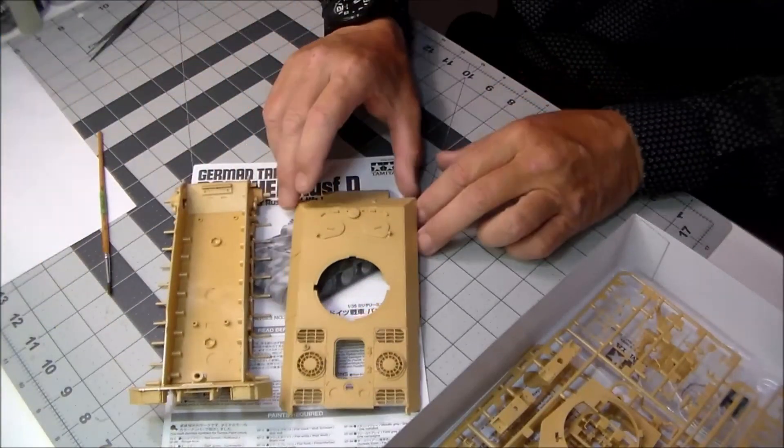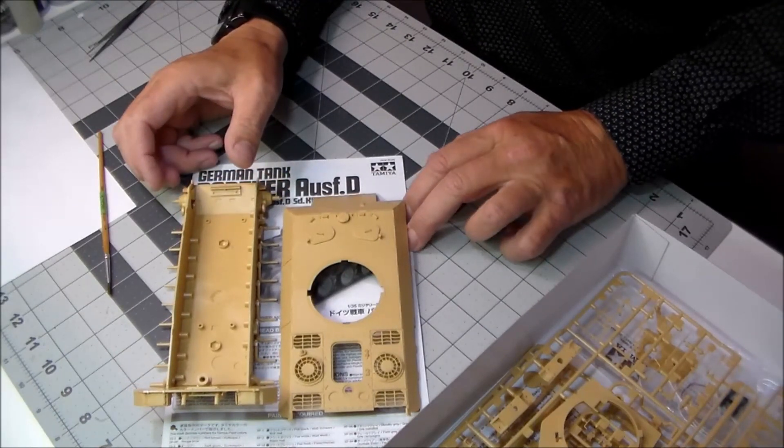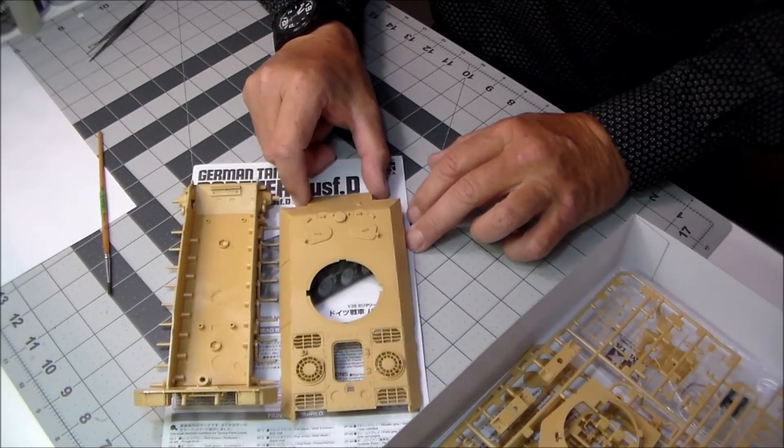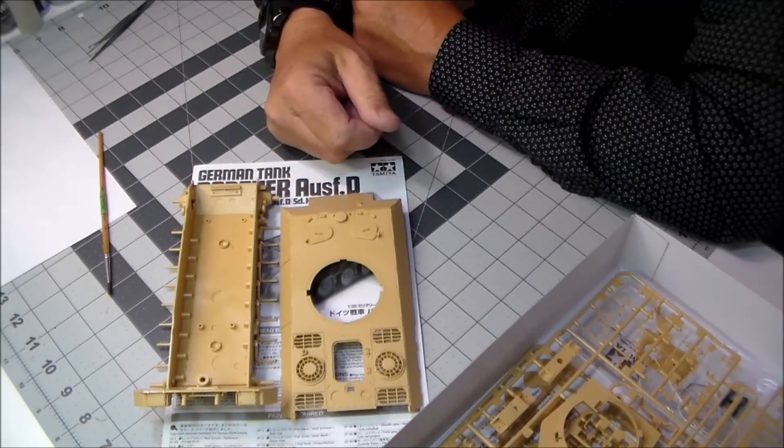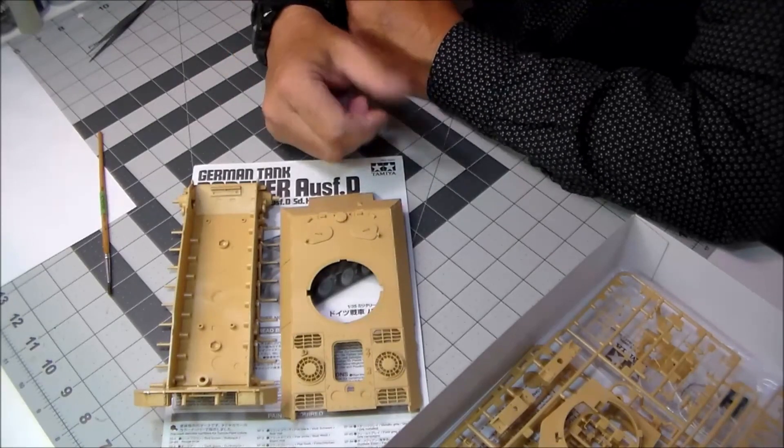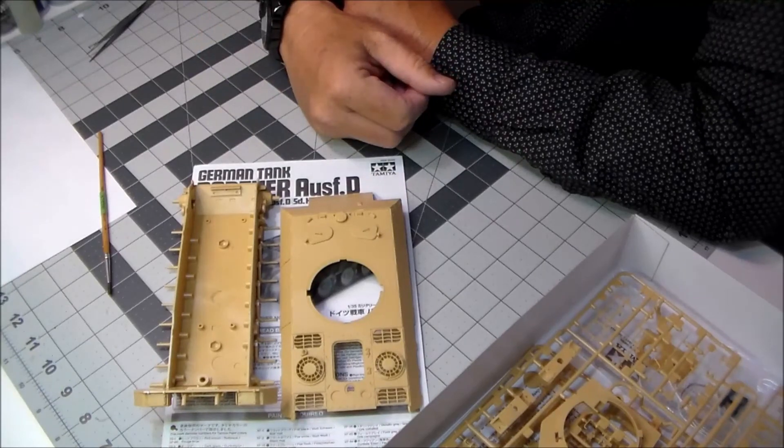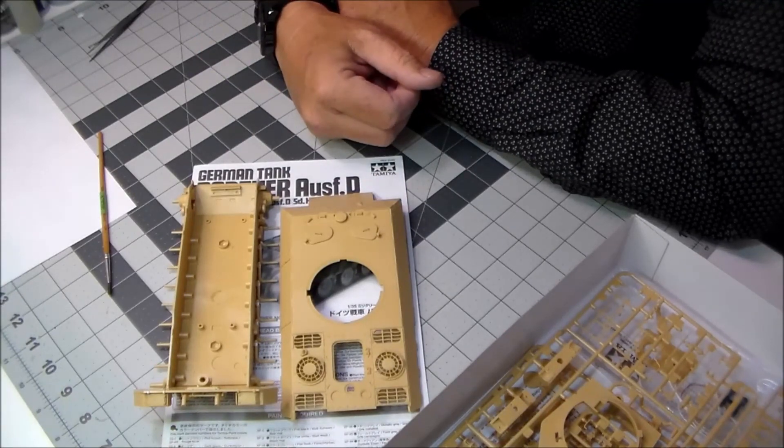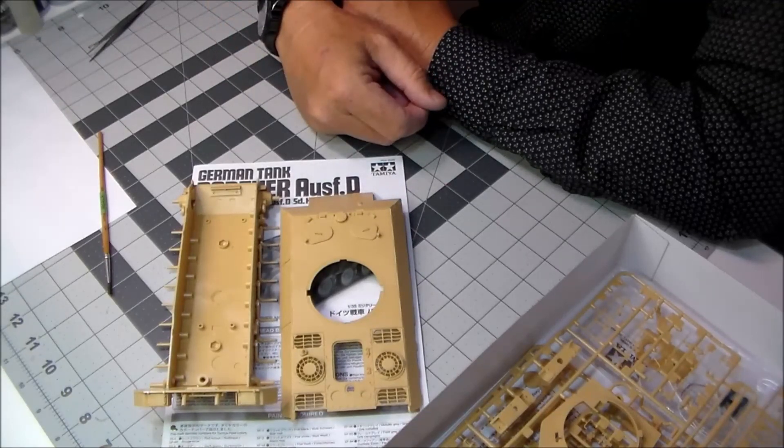I know I say this a lot about Tamiya kits, but they just almost fall together. I like this kit. It's really fun to build so far. Very little cleanup and just well molded. Everything fits together. Just typical Tamiya. Anyway, that is it for now. As always, thanks for watching Plastic Models by a Regular Dude, and I will catch you guys on the next episode.